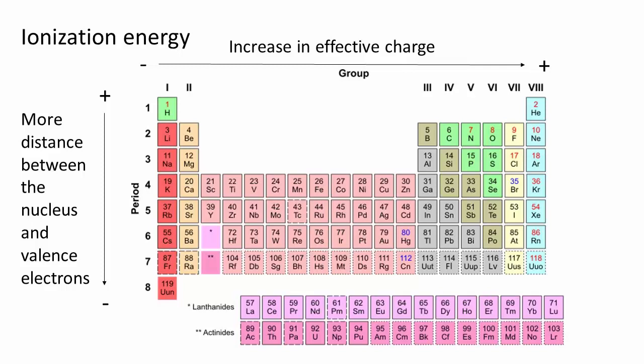However, there are two exceptions as we go from left to right in each period. It is actually easier to ionize a group 3 atom than a group 2 atom. This is because the group 3 atom has a p electron that is higher in energy and thus more easily removed.